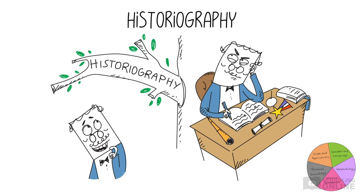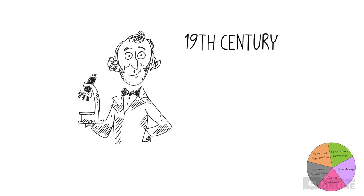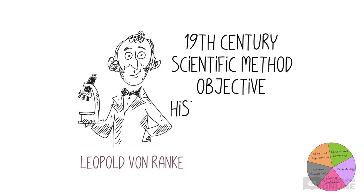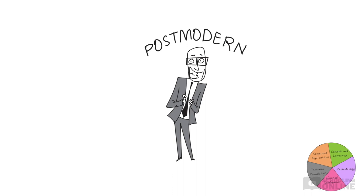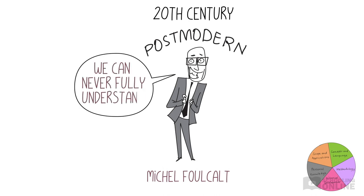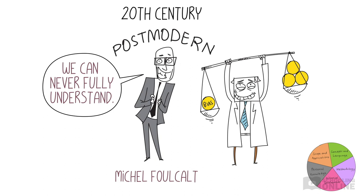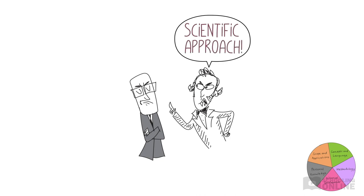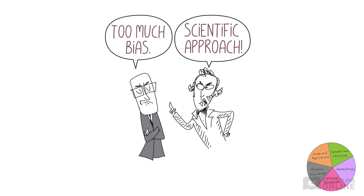Approaches to historiography have varied considerably over the ages. For example, in the late 19th century, the historian Leopold von Ranke decided that history should be approached scientifically. He thought that we could apply the scientific method to arrive at an objective understanding of historical events. In contrast, in the late 20th century, postmodern historians like Michel Foucault argued that we can never fully understand the past, emphasising that sources are always biased and only provide an incomplete picture of what happened. Examining different approaches to writing history raises many interesting questions about how we generate historical knowledge.